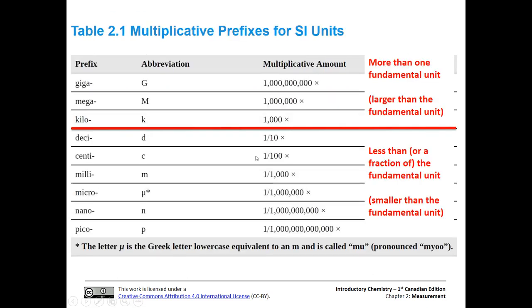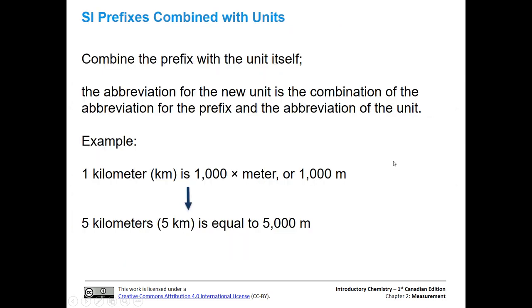We have multiplicative prefixes for SI units. Three of them are larger than the fundamental unit, and all of the rest are smaller. A kilo is a thousand of something. A mega is a million, and a giga is a billion. Then as we go through here: deci, a tenth; centi, one one hundredth; milli, one one thousandth; micrometers we just talked about, that's a millionth; nano is a billionth; and pico is 10 to the negative 12. So very small. You're going to see milli, micro, and even nano fairly often in chemistry because we deal with a lot of small things.